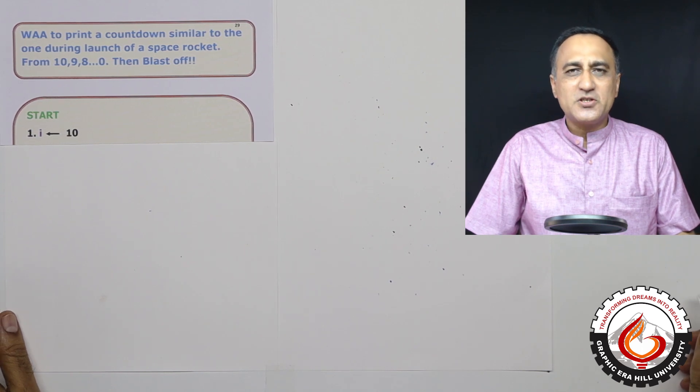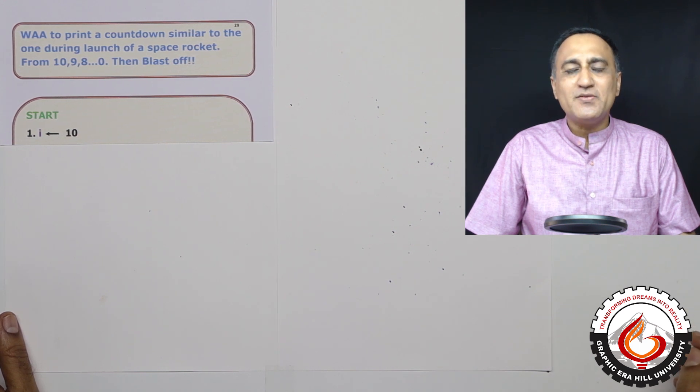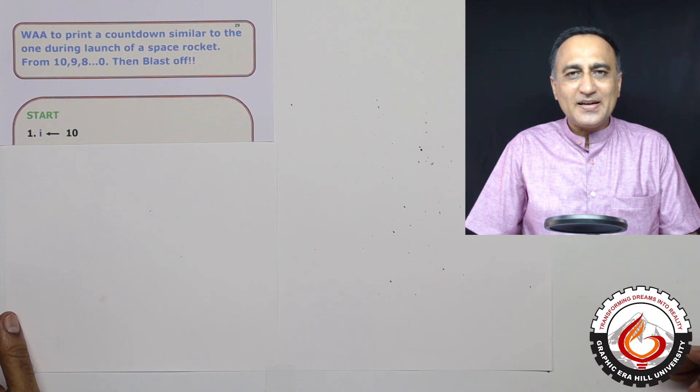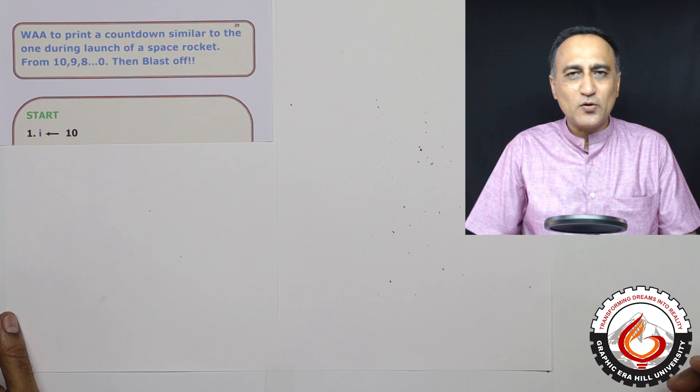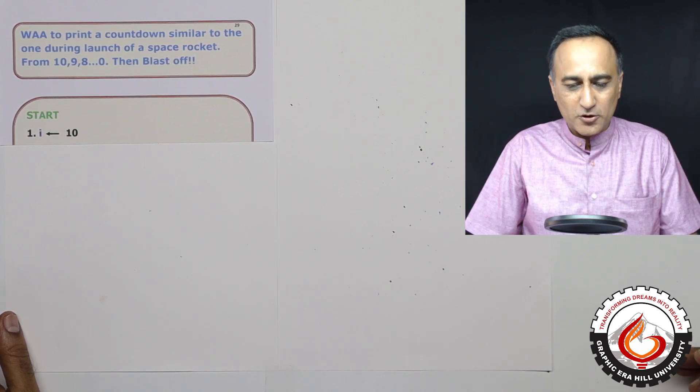You must have watched on television when a rocket is being launched, there is a countdown generally at the bottom of your television screen, which is counting from 100, 99, 98, 97, all the way till zero and then printing the message blast off when the rocket is launched.